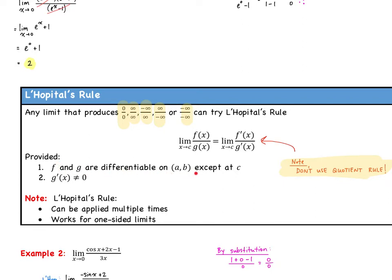Some conditions: f and g have to be differentiable on the closed interval from a to b, except possibly at c, and g'(x) cannot equal zero. Some notes: L'Hôpital's Rule can be applied multiple times — if you apply it once and substitution still gives one of those indeterminate forms, apply it again. It also works for one-sided limits.